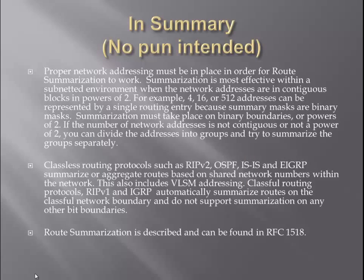In summary, a proper network address must be in place in order for route summarization to work. Summarization is most effective within a subnetted environment when network addresses are contiguous blocks of powers of two — for example, 4, 16, or 512 addresses can be represented by a single routing entry because of the summary or binary mask. Summarization must take place on binary boundaries or powers of two. If the numbers of the network address are not contiguous or a power of two, you can divide the addresses into groups and try to summarize the groups separately.